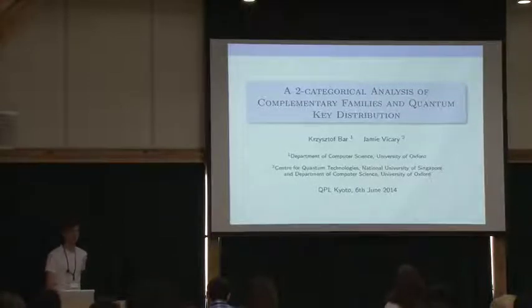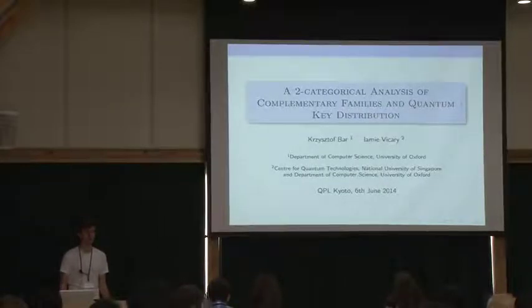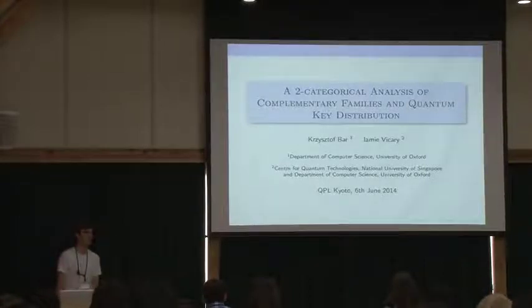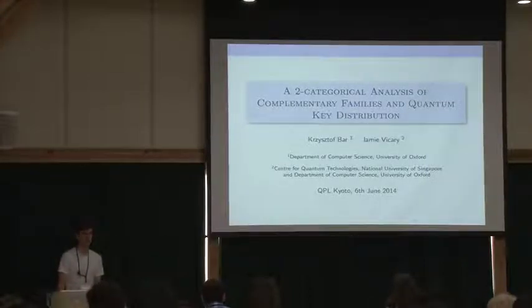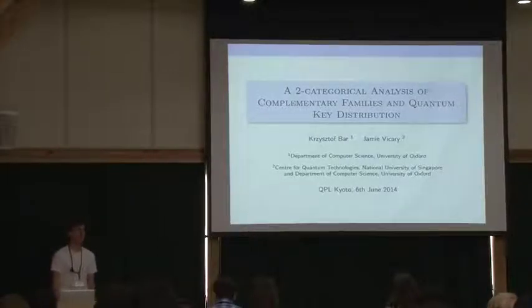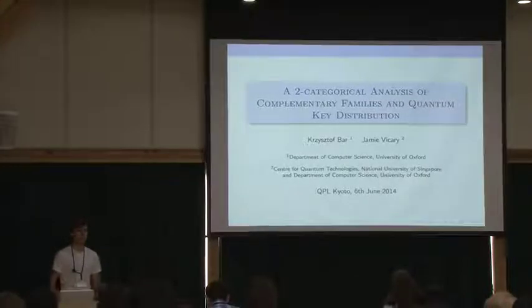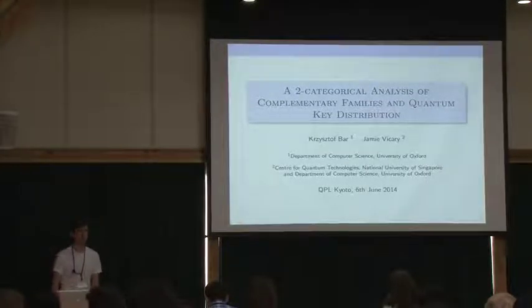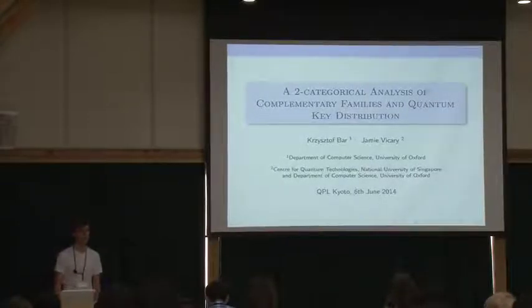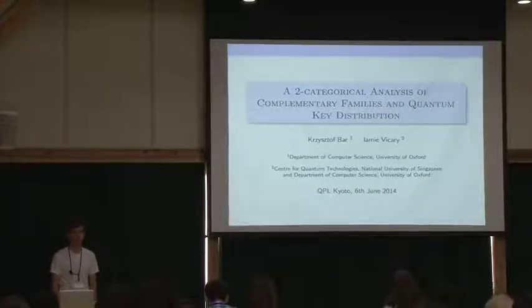As you know, two categories are very similar to the usual categories that most of us deal with, except for the fact that they have a layer of additional structure on top of the usual categorical structure. Apart from objects and morphisms, they also have two morphisms that allow us to investigate and consider relations between morphisms. In the same way as morphisms allow you to reason about objects, so you can talk about objects not only being equal or unequal, but also about some relations between them. Two morphisms serve the same role for one morphism.